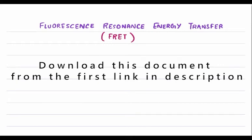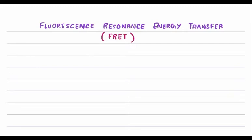We are talking about fluorescence resonance energy transfer, or FRET. This is a very important technique when we want to see whether two proteins are interacting — in short, protein-protein interaction. Let's say I have a protein X and a protein Y; I want to see whether these two proteins are interacting or binding to each other. I can use this FRET technique in order to determine their binding or interaction.